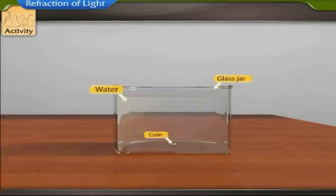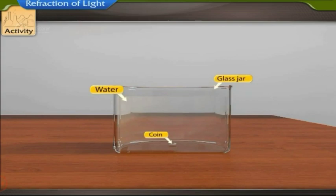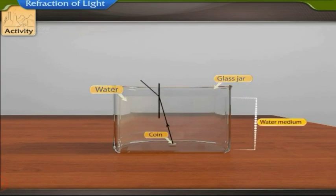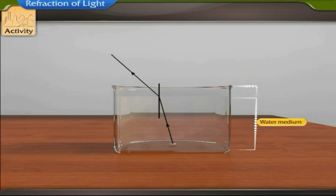When you place a coin at the bottom of a glass jar, the rays of light begin to emerge from the coin. Initially, they are in the water medium. When the rays emerge out of the water, they travel in the air medium. On entering the air medium, they change their direction.